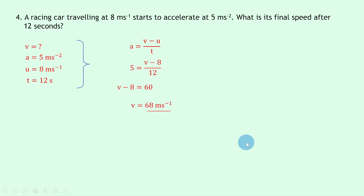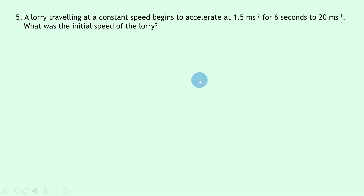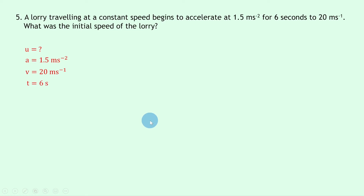Lastly, question five says a lorry traveling at a constant speed begins to accelerate at 1.5 meters per second squared for 6 seconds to reach 20 meters per second. What was the initial speed of the lorry? This time we're given the acceleration but we want the initial speed, not the final speed. Writing down what we know: we're trying to find u, the acceleration is 1.5 meters per second squared, the final speed v is 20 meters per second, and the time t is 6 seconds.